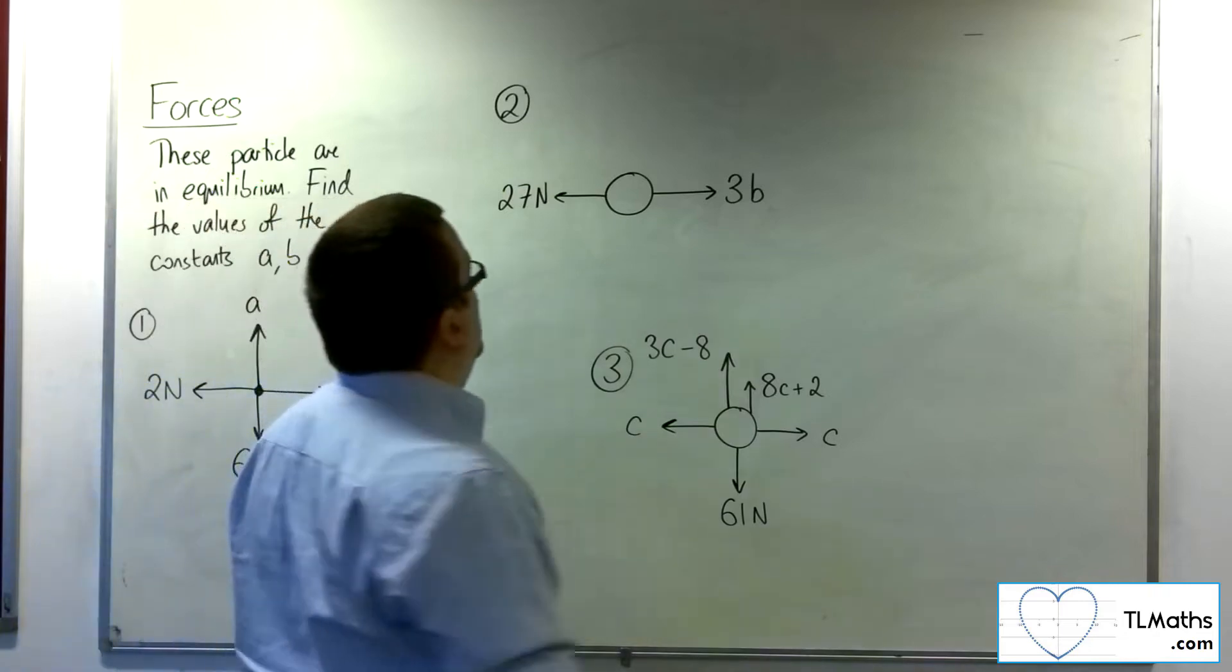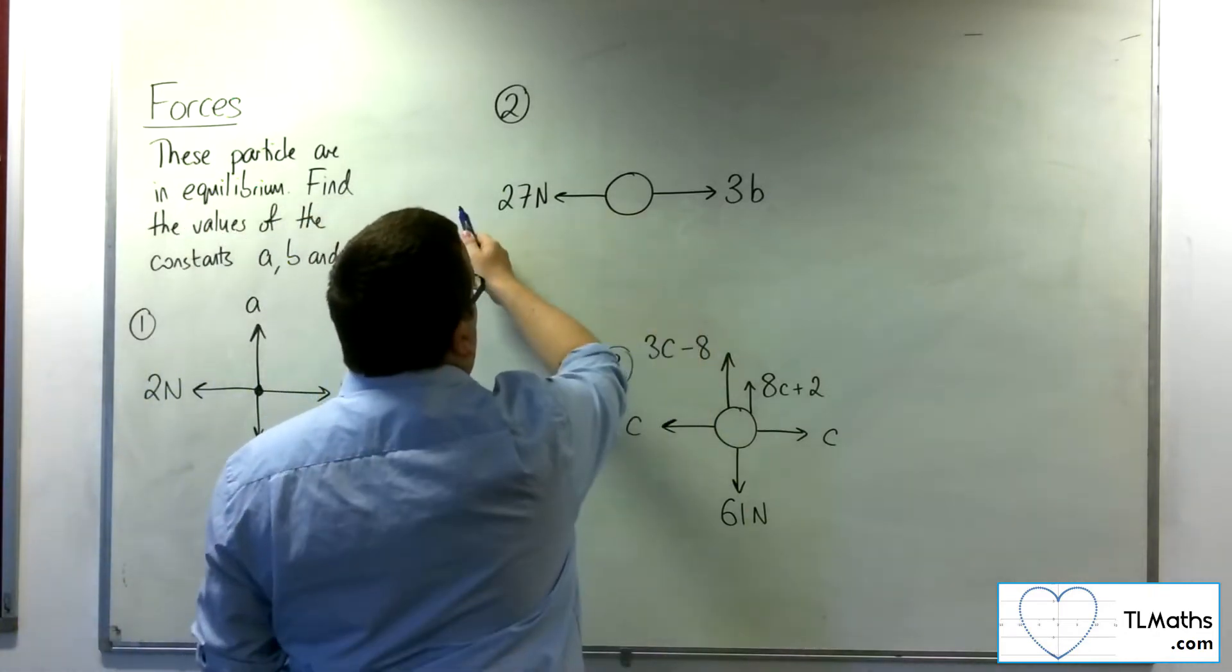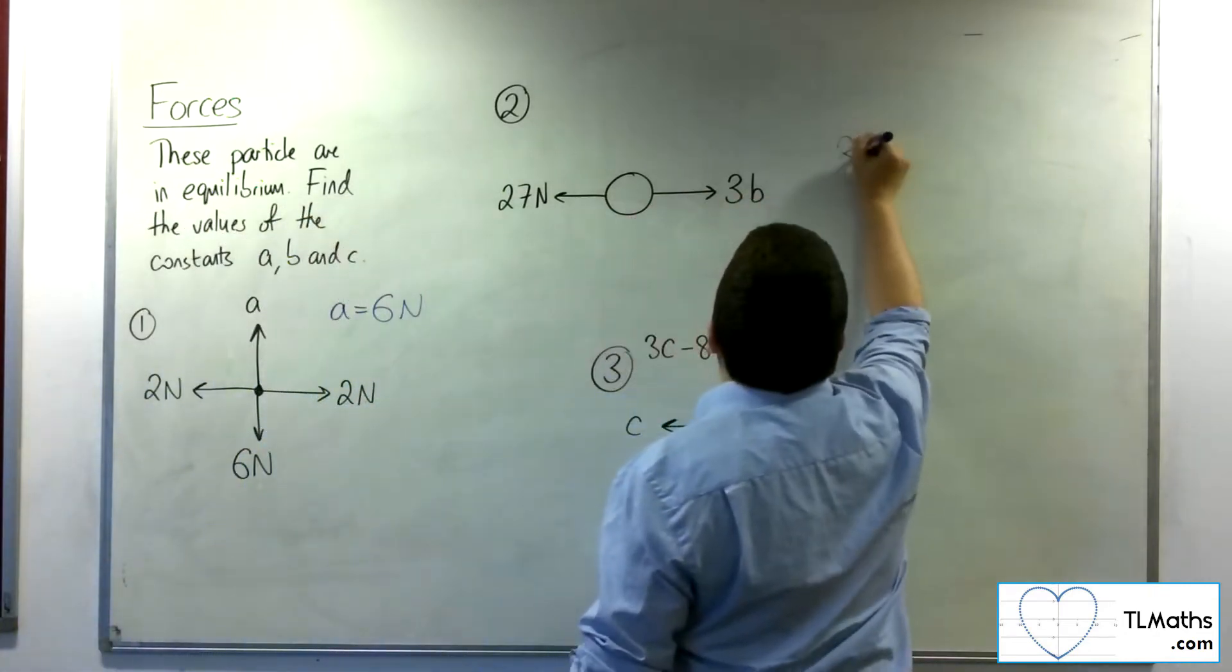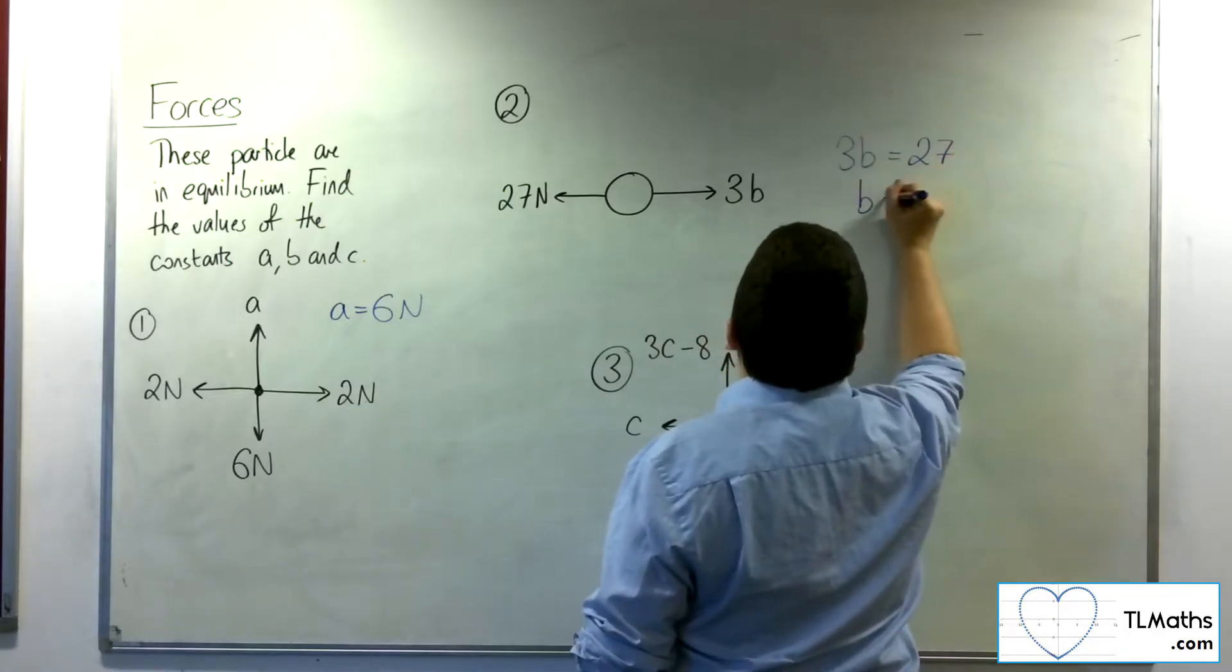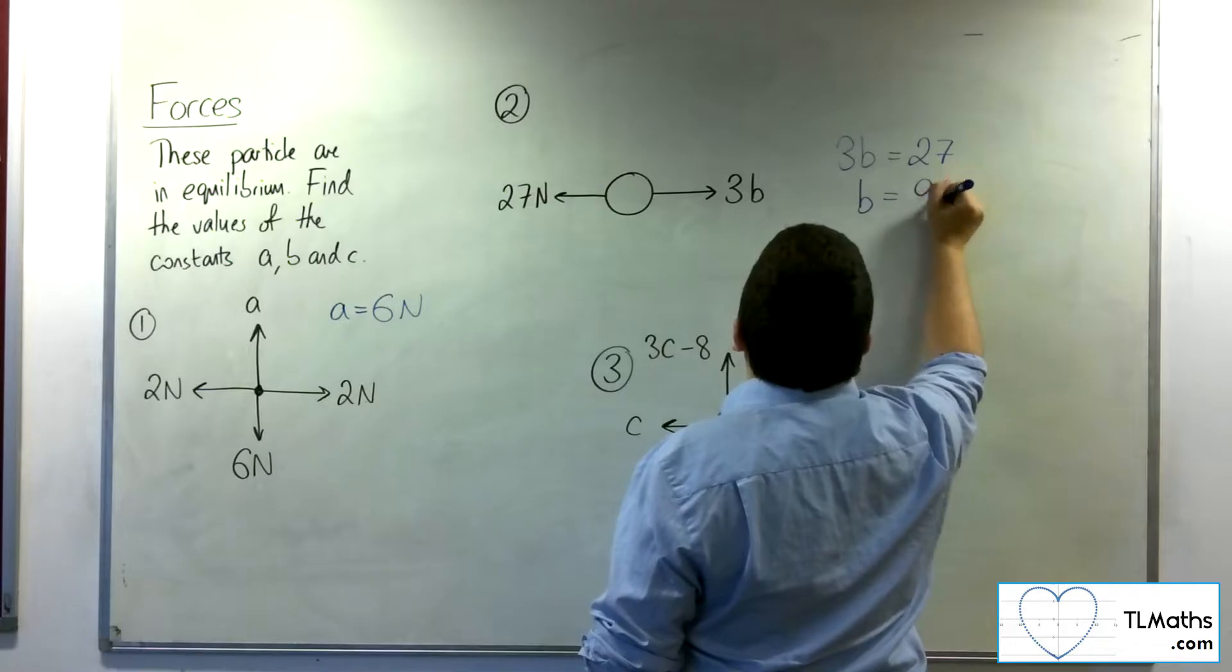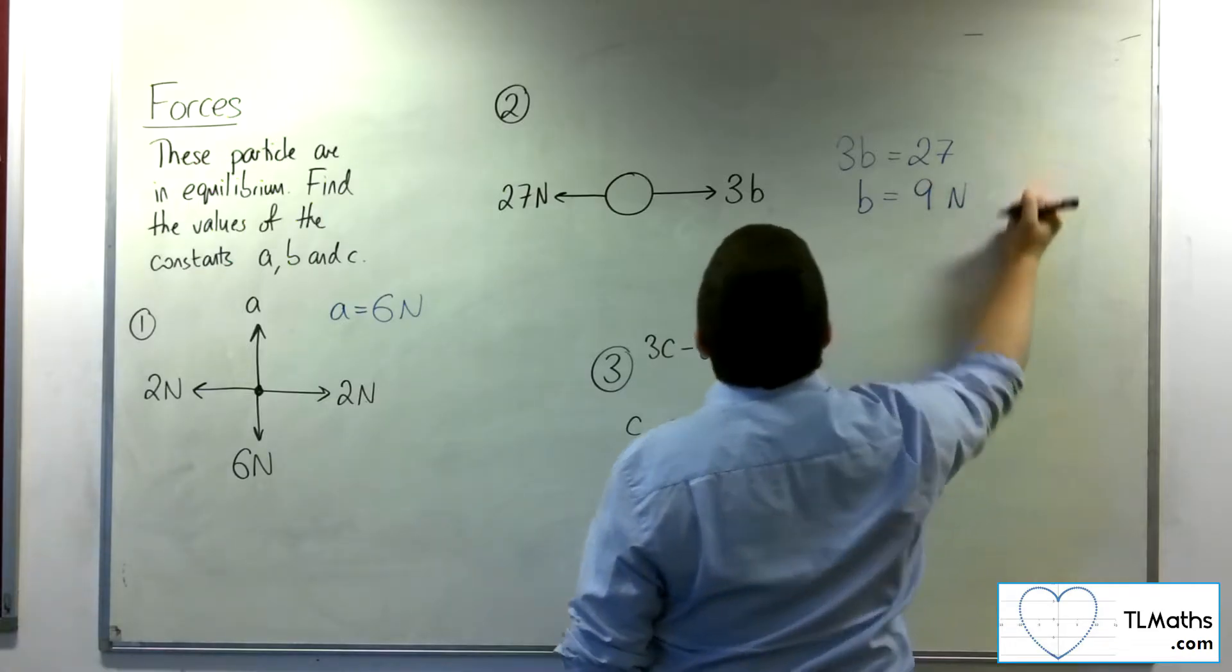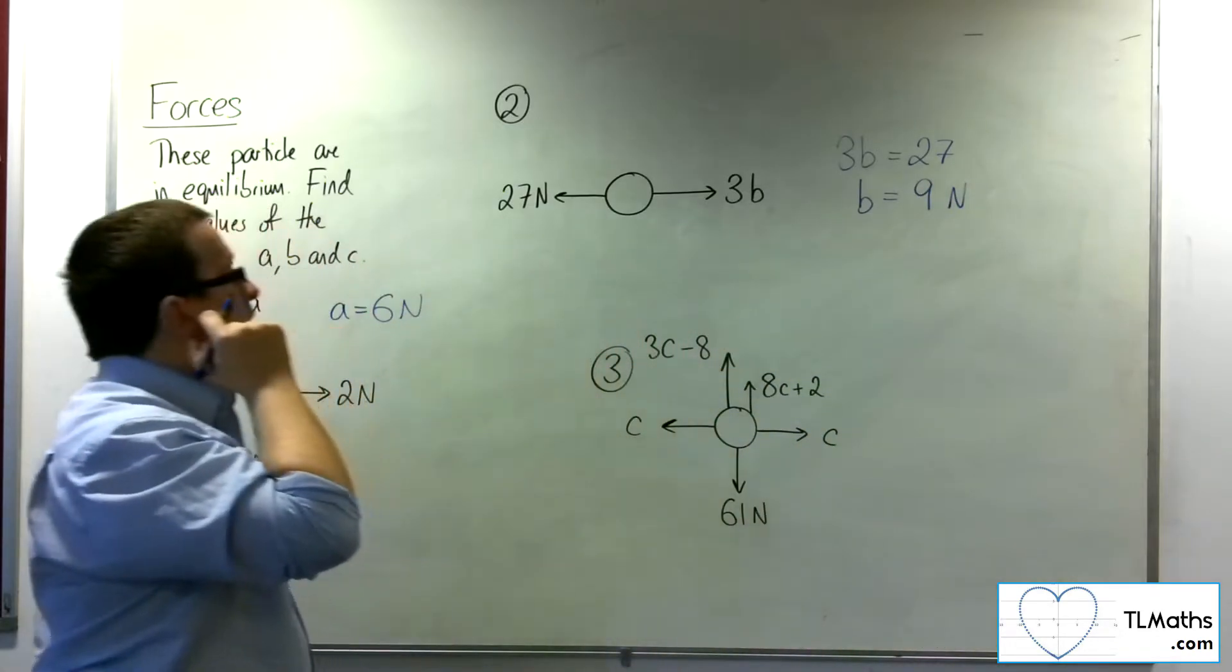Number two, the 3b and the 27 must cancel each other out. So 3b must be equal to 27, and so b must be 9. Okay, so b is 9 newtons.